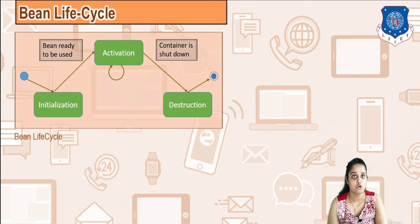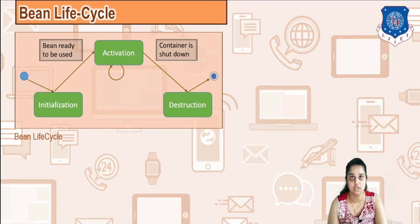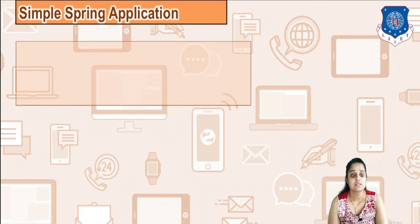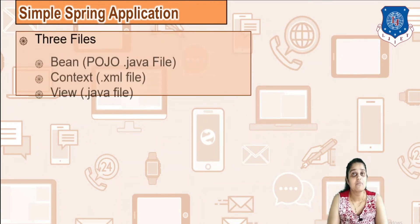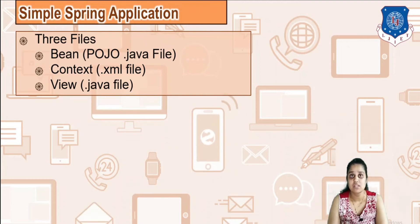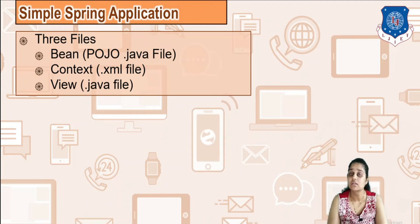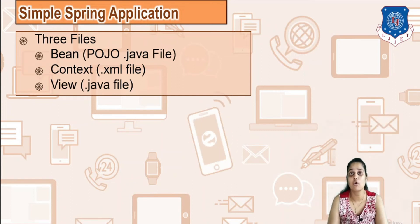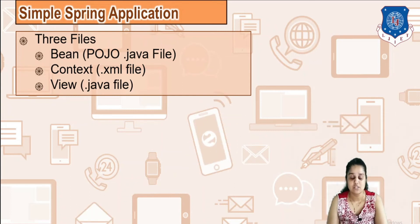Next, we are going to develop a very simple Spring application using three different files: one is your bean or POJO file, one is your context or XML file which acts as a container for Spring, and you view these things using a third file which is your public static void main or caller file. Let us begin with the coding.